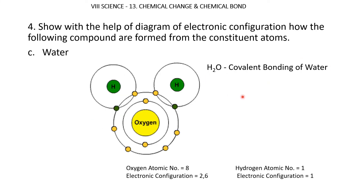Water forms a covalent bond. Oxygen (atomic number 8) has configuration 2, 6 — it needs 2 more electrons. Hydrogen (atomic number 1) has only 1 electron in a single shell and needs 2 for stability. Two hydrogen atoms each share 1 electron with oxygen; oxygen combines with 2 hydrogen atoms, giving the formula H2O.